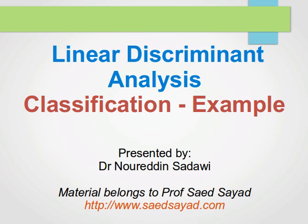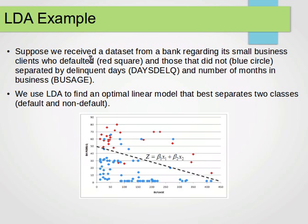Now let's take an example and see how things work. Let's assume that we receive a dataset from a bank regarding its small business clients who defaulted, represented here by red squares, and those who did not default, represented by blue circles.